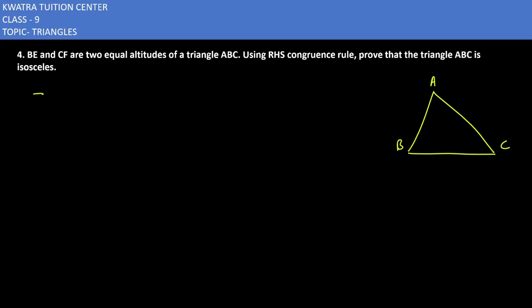To prove: AB is equal to AC. Given that BE and CF are equal.